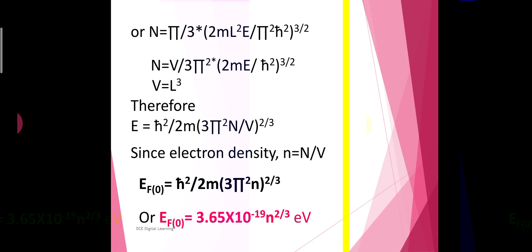Since each state has two spins, the number of electrons n = 2 × (πr³/6) = πr³/3. Substituting and simplifying, n = (π/3)(2mL²E / π²ħ²)^(3/2), or n = (L³/3π²)(2mE/ħ²)^(3/2), where L³ = V, the volume of the solid. Therefore E = (ħ²/2m)(3π²n/V)^(2/3).